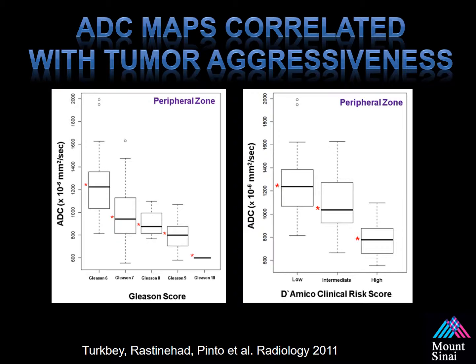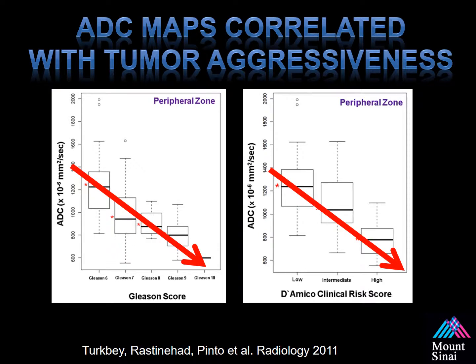Looking at the impact of ADC values, a study from the NIH found that as the ADC value decreases, there's an inverse relationship with increasing Gleason scores as well as D'Amico risk stratification. This makes sense — as you become more compact or denser, more cellular tissues, similar to an increase in Gleason score, this also equates with diffusion-weighted imaging showing increased restricted areas within the tissue.